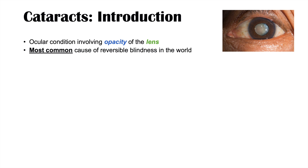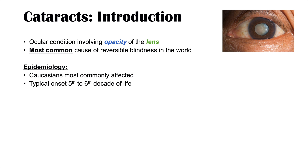Cataracts are the most common cause of reversible blindness in the world, so they are very common. They are more common in certain ethnic groups, particularly in Caucasians, and have a typical onset between the fifth to sixth decade of life. They can occur earlier or later, and when they do occur, they gradually and progressively worsen over time.